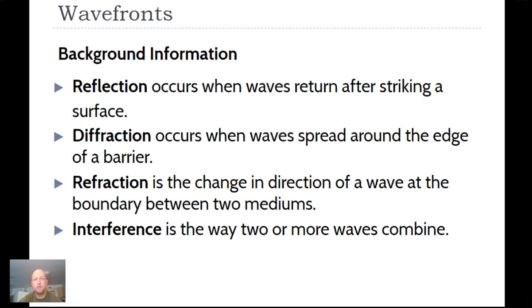Looking at background information: reflection occurs when waves return after striking a surface, which we've looked at a lot already — specifically when varying the types of mediums or looking at a fixed end. Diffraction occurs when waves spread around the edge of a barrier. Refraction is the change in direction of a wave at the boundary between two mediums. Interference is the way two or more waves combine. We're not going to be looking too much at refraction yet — that'll be the next topic.